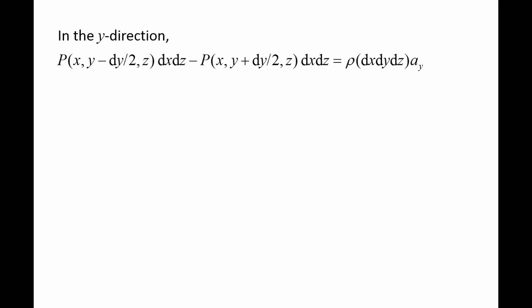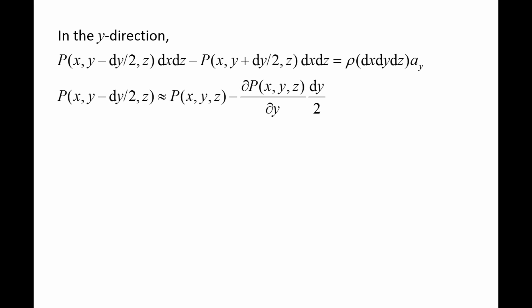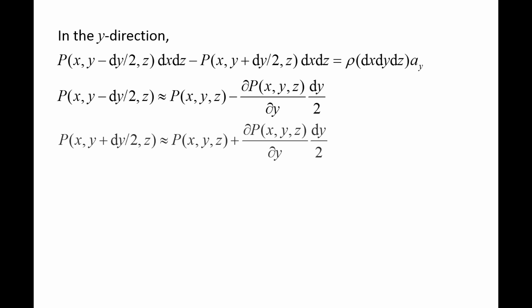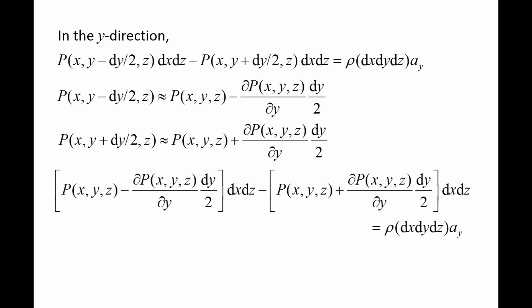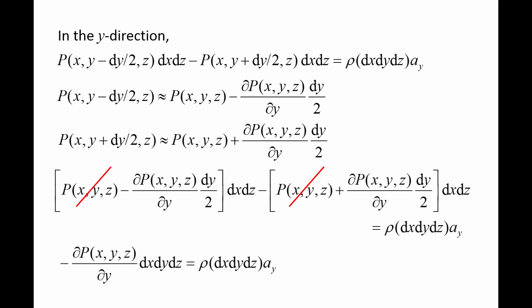For the equation of motion in the y-direction, the pressure at y minus half dy is approximately the pressure at x, y, z minus partial p partial y at point x, y, z times dy divided by 2. The pressure at y plus half dy is approximately the pressure at x, y, z plus partial p partial y at point x, y, z times dy divided by 2. Plugging these expressions into the equation of motion, we see that the pressure at x, y, z drops out, and we can eliminate dx, dy, dz from both sides. We are left with negative partial p partial y evaluated at x, y, z equals rho times ay.